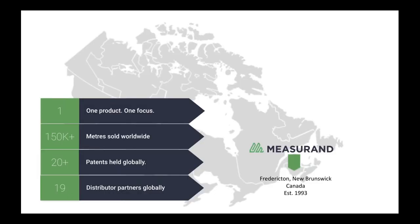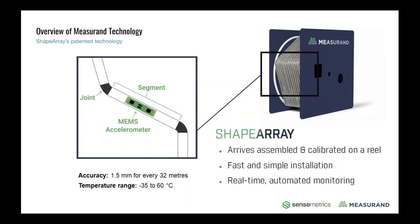Mezuran is a company based on the east coast of Canada, established in 1993. We began building the Shape Array in 2004–2005. Since then, that's our only product — we've shipped 150,000 meters of it all over the world. We have many patents in different applications, installations, and technologies, and 19 distributor partners around the world. The Shape Array is sometimes called an electrified garden hose, an IPI on a reel, or a flexible inclinometer.